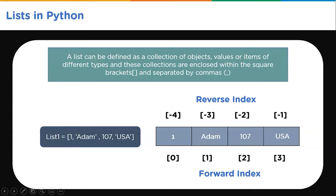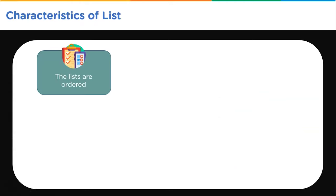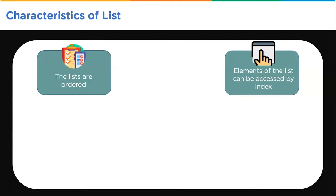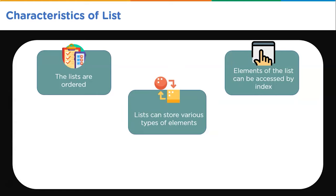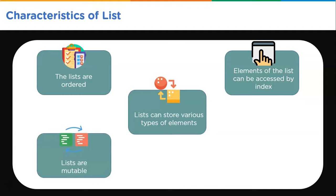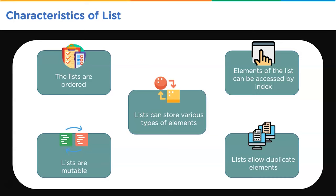Let's look at the characteristics of lists. First, lists are ordered — items have a defined order that will not change; new items are placed at the end. Second, elements of a list can be accessed by index values. Third, lists can store various types of elements — for example, numbers, strings, or even lists themselves. Fourth, lists are mutable, meaning we can change, add, and remove items after creation. Fifth, lists allow duplicate elements since lists are indexed and can have items with the same value.